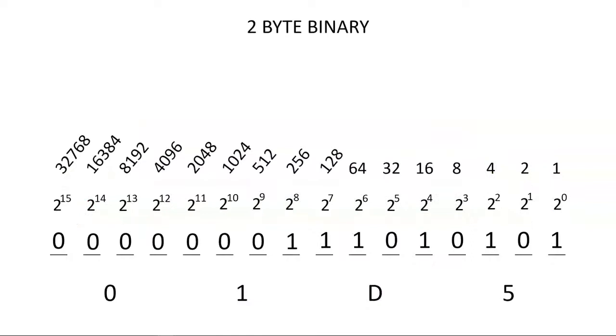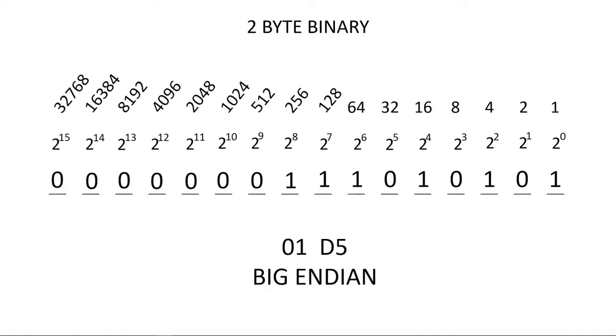But when we start getting into the hex level, it does make a difference. So shown here, we have hex 01 D5. It's represented in the left to right order, and so it's called Big Endian, because the biggest number is on the left. If we flip the hex values, we now have D501. This is Little Endian, because we've moved the most significant number to the right, and the least significant hex number to the left.